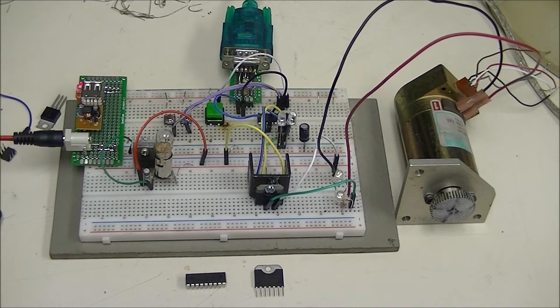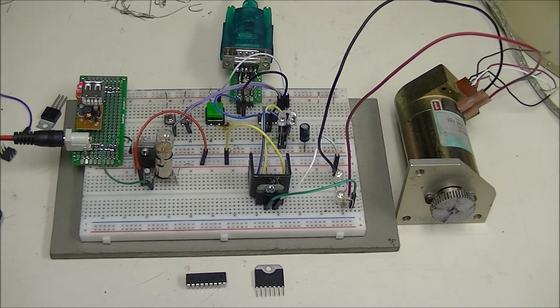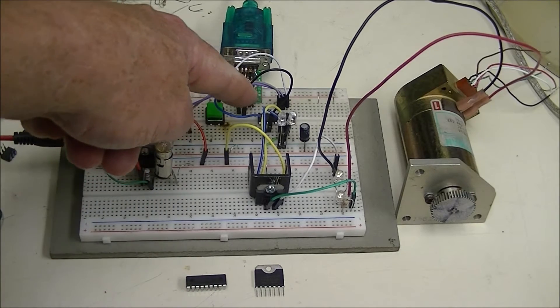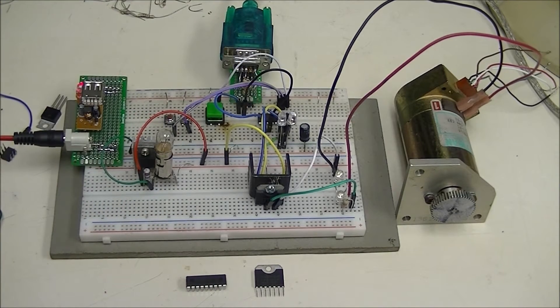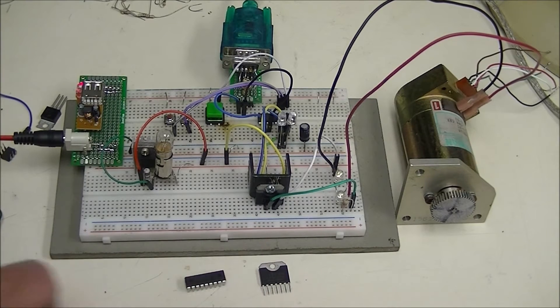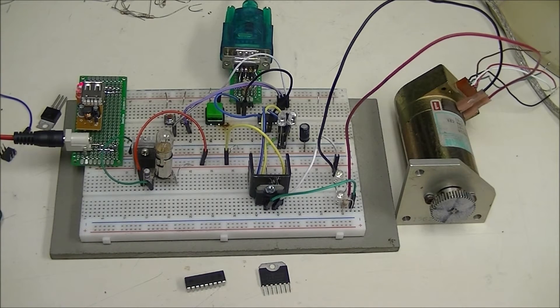In this demo we are using a PICAxe 18 M2 microcontroller. This is one of those here, buried up there behind those wires. Instead of transistors or MOSFETs, we're using the TA8050 H-bridge. This is an update of an older video.